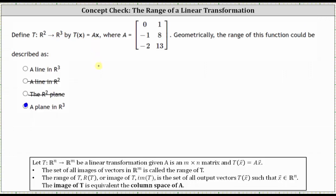If we're still not convinced, we could say that T of vector x is equal to matrix A times any vector x in R2. Let's let the vector x in R2 be the vector x1, x2. We know we can write this product as x1 times the first column of matrix A plus x2 times the second column of matrix A.